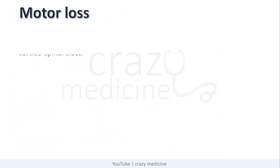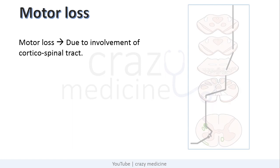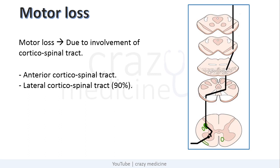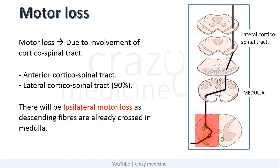Next is motor loss. Motor loss is due to involvement of the corticospinal tract, which is a descending tract. Basically there are two corticospinal tracts, namely anterior and lateral. The lateral corticospinal tract forms 90% of connections. While descending it crosses in the medulla, so there will be ipsilateral motor loss as the descending fibres are already crossed in the medulla.